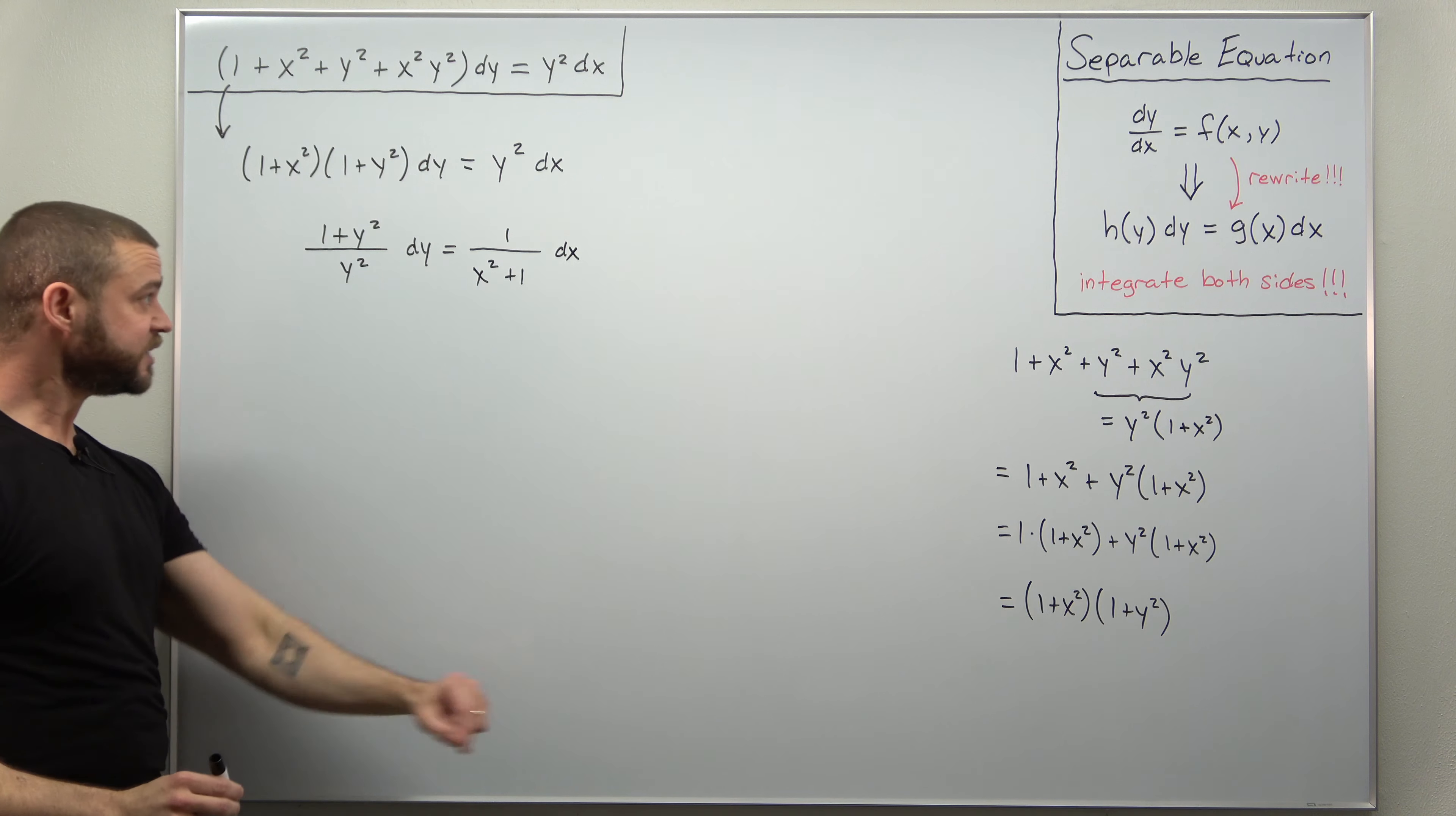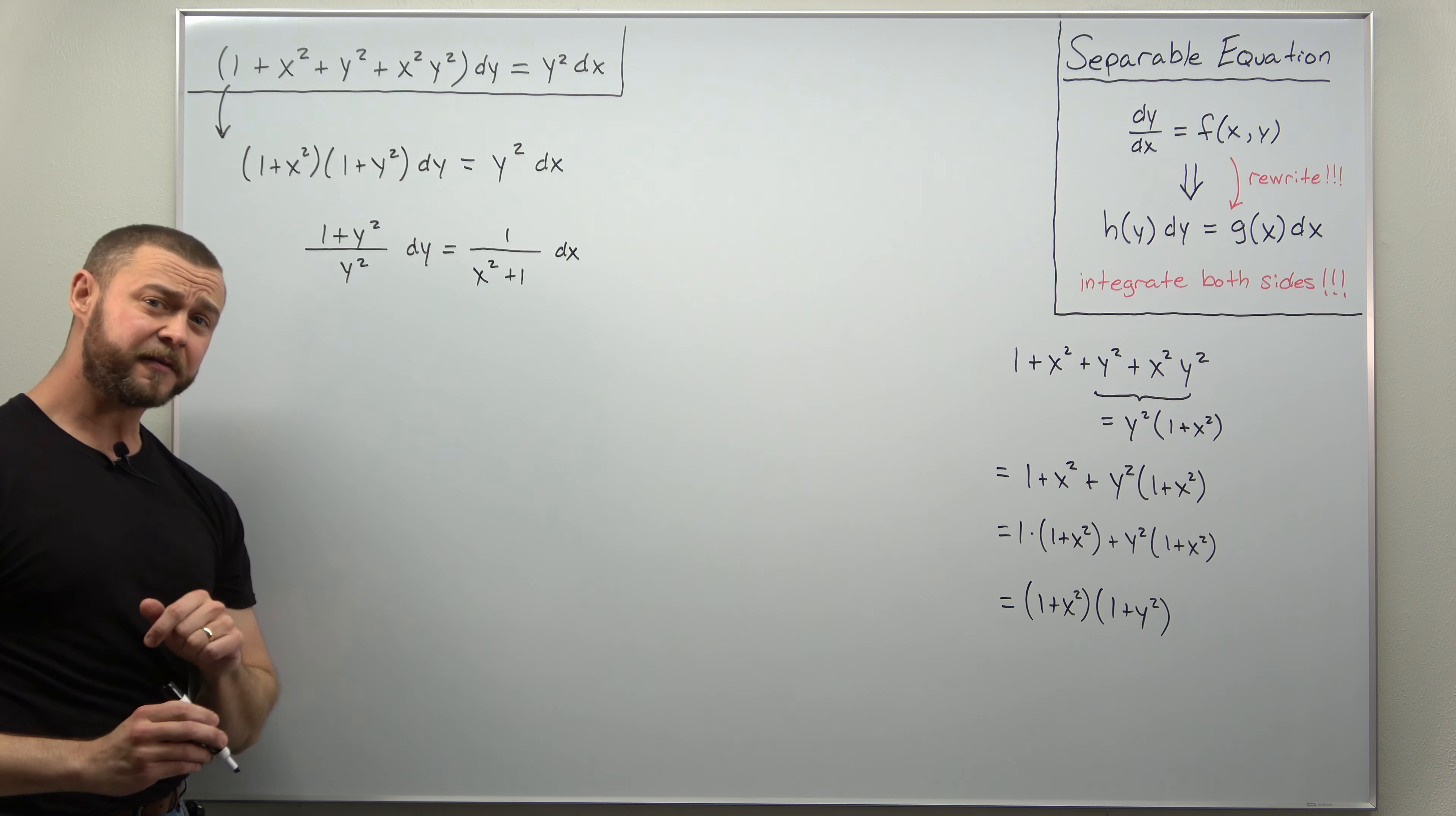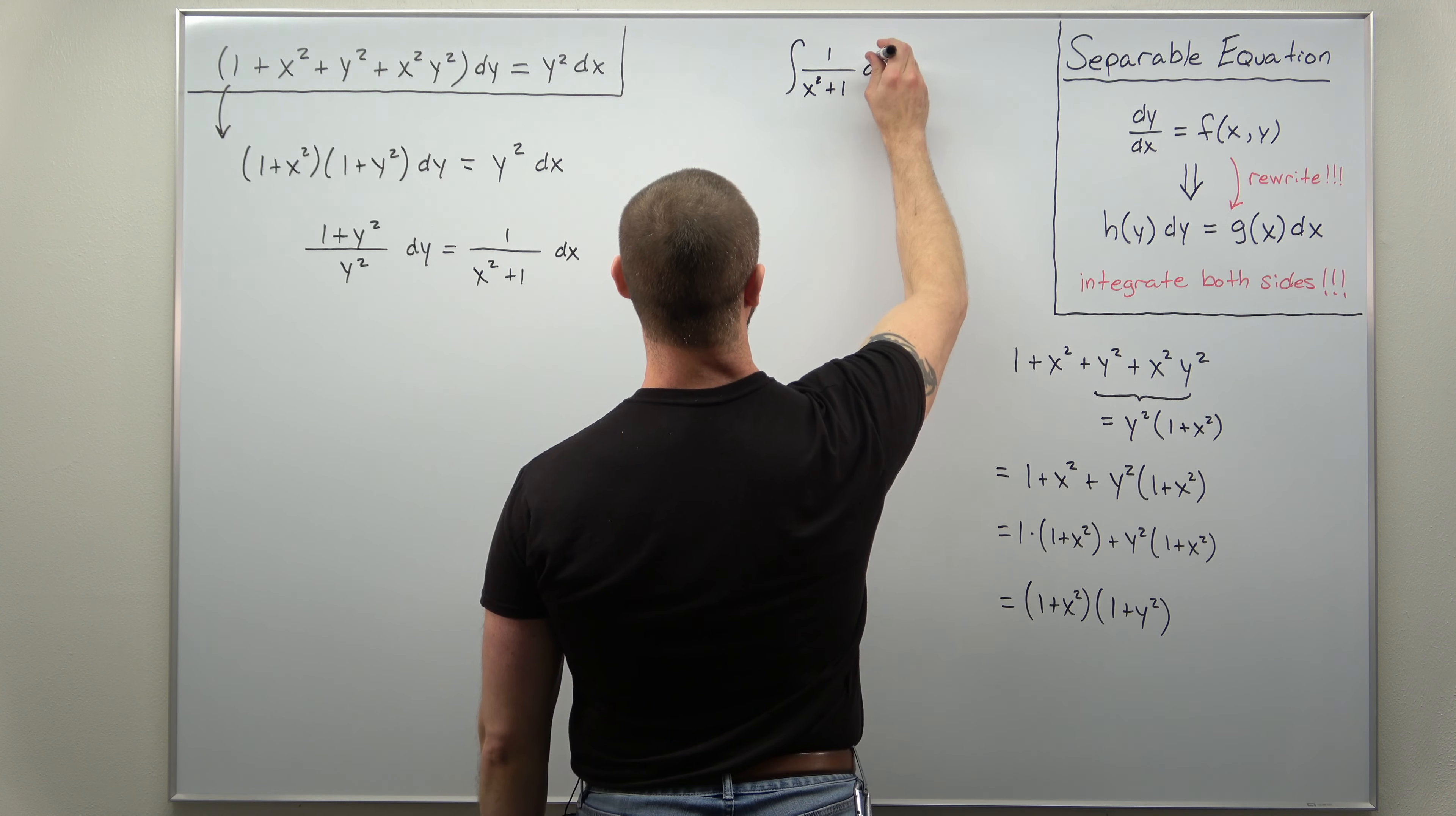All right, now as it turns out the right hand side, when you integrate that, it's actually really simple and it's a basic antiderivative which you might have forgotten. But let's go ahead and review it. The basic antiderivative we're going to use: your antiderivative for 1 over x squared plus 1.